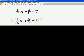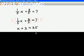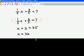5 and this 5 will cancel out. Likewise, these two 5s will cancel out. And our next step looks like that. X plus 3 equals 35. And of course, X would then equal 32.